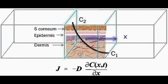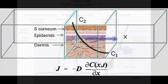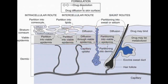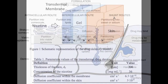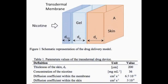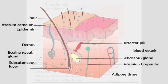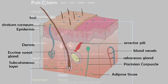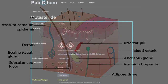In dermatology, this refers to the difference in drug concentration between the surface of the skin, where the drug is applied, and the inner layers of the skin, where the drug action is needed. A higher concentration of a drug on the skin surface can create a steeper gradient, potentially increasing the rate at which the drug diffuses into the skin.